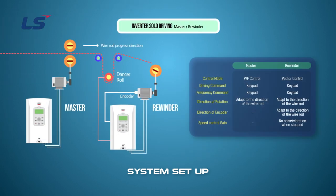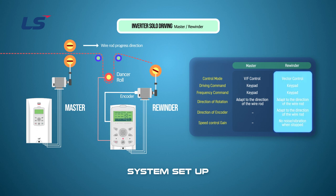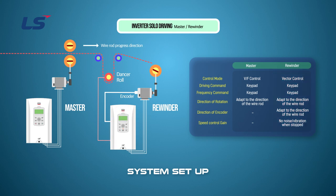Once the inverter connection is complete, independent speed control is performed on the master and rewinders to determine whether the operation is abnormal. Set the command source and frequency source to keypad. In the case of rewinders, set parameters related to the encoder and speed controller required for vector control. Both the master and rewinder inverters are set to V by F control mode, and the operation signal is applied to align the rotation direction of the motor.